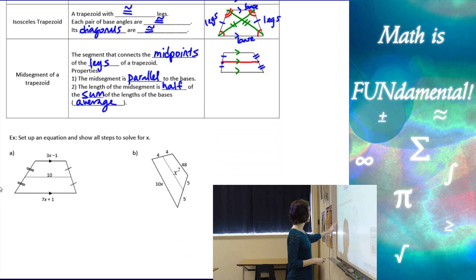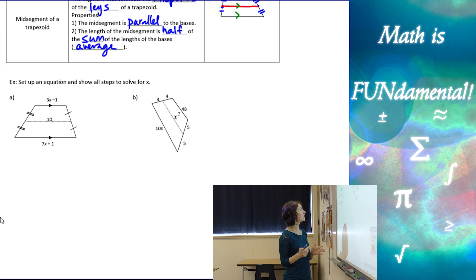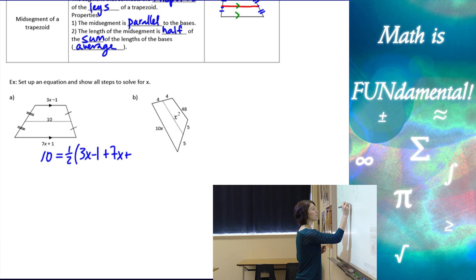So let's look at a couple examples. We're going to set up an equation and show all the steps, which might take a little while, but you'll see, these examples can get a little complicated, we want to make sure we really know how to solve them. So here we have our mid-segment is ten, and our two bases there, so in order to set up our equation, I know that the length of the mid-segment equals half of the sum of 3x minus 1, one of our bases, and 7x plus 1.